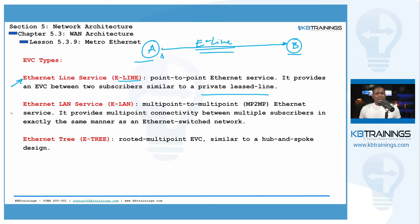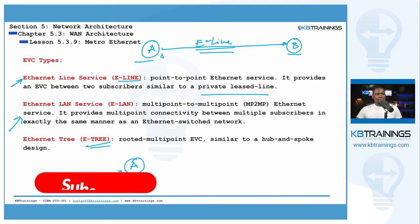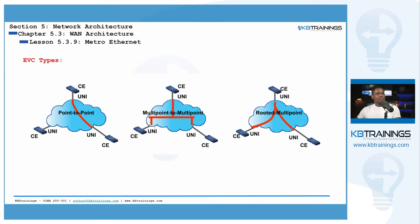Then we have E-LAN, or Ethernet LAN Service. This is multipoint-to-multipoint — like having a big switch connecting all your sites so they can exchange traffic between those different sites as if in a single LAN. Third, we have E-Tree, which is more like a hub-and-spoke topology. There's a main site such as a headquarters acting as the root, with satellite locations B and C connected to it — a root with leaves going out.